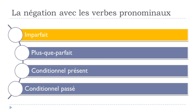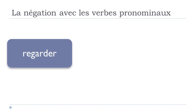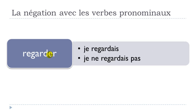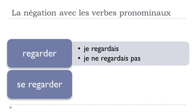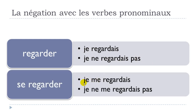Now let's look at the imparfait form. For REGARDER, you get JE REGARDAIS, and the negative form is JE NE REGARDAIS PAS. For SE REGARDER, since there's only one verb, it's quite simple: JE ME REGARDAIS, and the negative is JE NE ME REGARDAIS PAS. Remember: NE first, then ME, then PAS at the end.